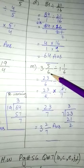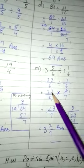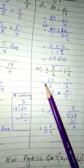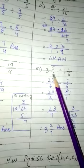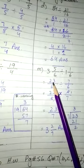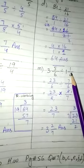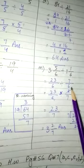Part m: 3 5/6 divided by 1 1/6. Now let's make them improper fractions. 6 times 3 is 18, plus 5 is 23, so 23/6. For the second fraction: 6 times 1 is 6, plus 1 is 7, so 7/6. Now we have the division sign.